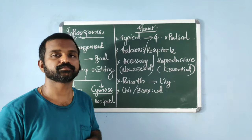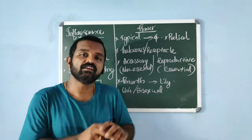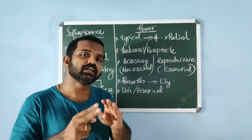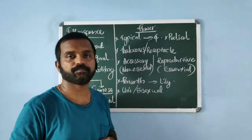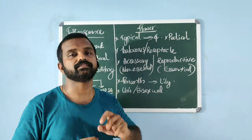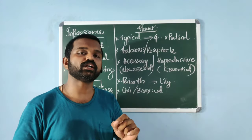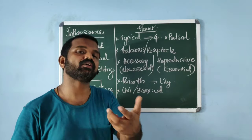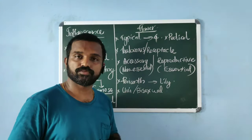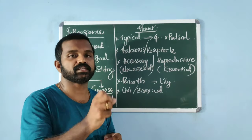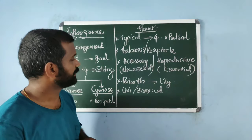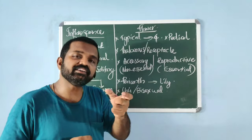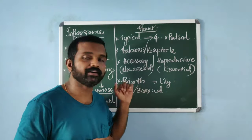A flower is the reproductive unit of the plant. A typical flower has four whorls: calyx, corolla, androecium, and gynoecium. Calyx and corolla are collectively termed accessory organs or non-essential whorls; androecium and gynoecium are termed essential or reproductive organs. The stalk of the flower is the pedicel. The swollen end of the pedicel is known as the thalamus or receptacle.